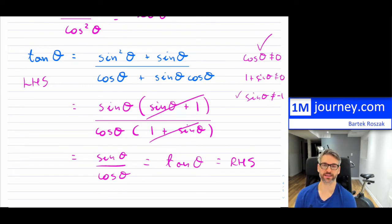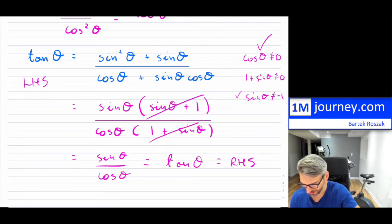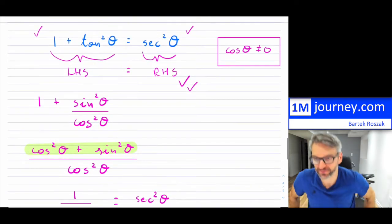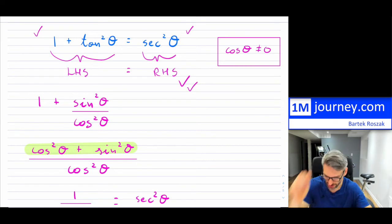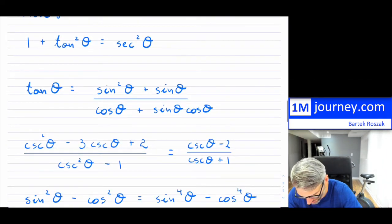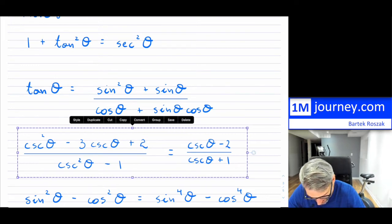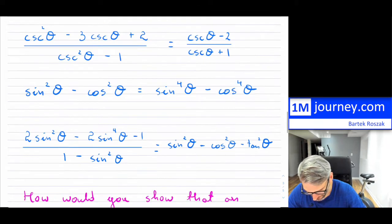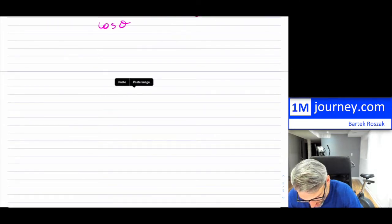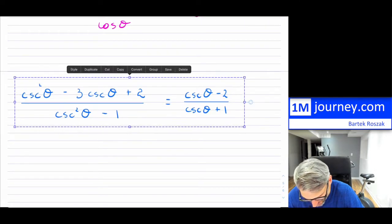That's what trig identities are all about — these little puzzles that you manipulate to show that the two sides are equal. So that's example number two. Let's take a look and see what else they have here in terms of examples. Here is another one. This one looks more complicated.